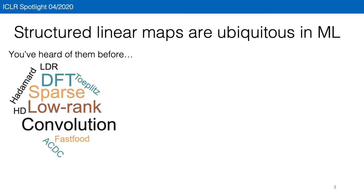Structured linear maps are those with fast algorithms and few parameters, and they are ubiquitous in machine learning. You've probably heard of some of them before.